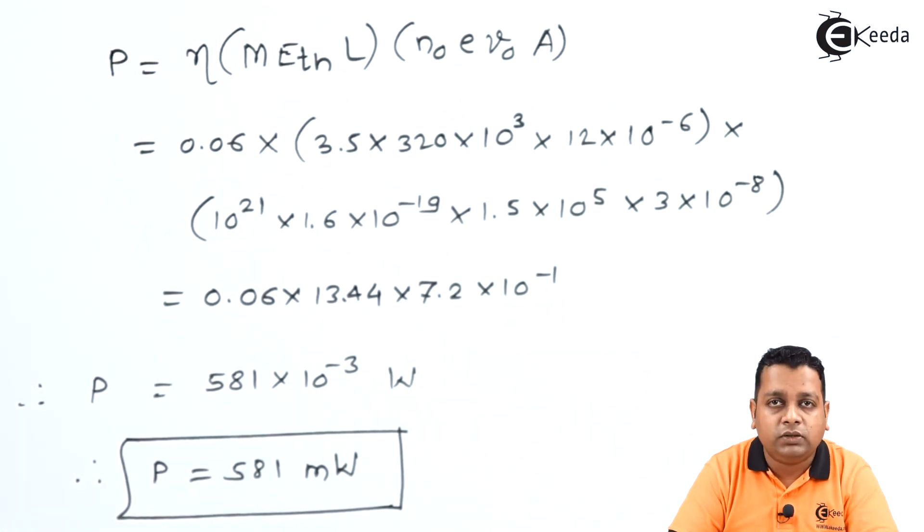So after completion of the output power calculations, now in the next lecture we shall be addressing the next diode in the family of transferred electron devices. The diode is called as indium phosphate diode represented as INP. I hope you are definitely enjoying the details of microwave engineering that we share with you. For more information like this you can subscribe to Ikeda channel. Thank you.